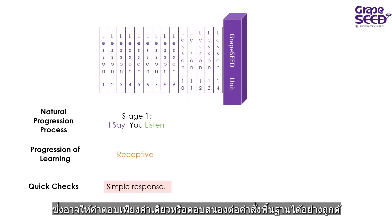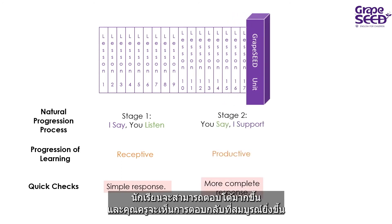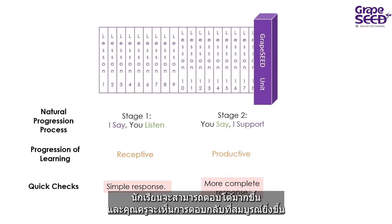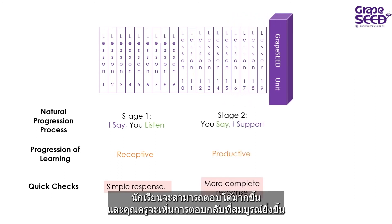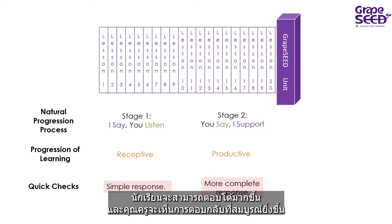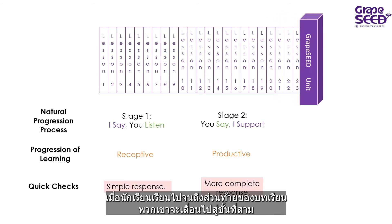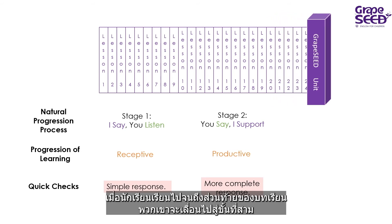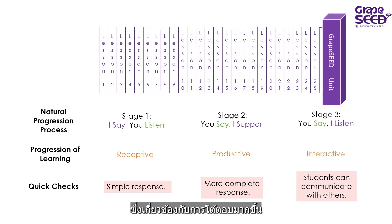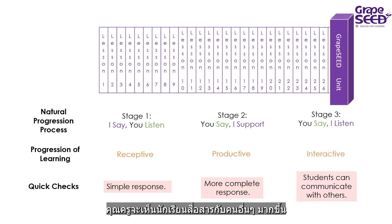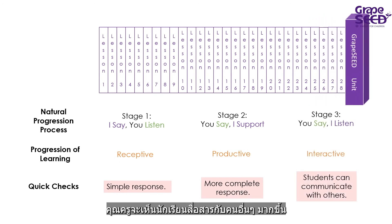As the lessons progress, the students move to stage two, where they are able to produce more and the teacher can look for more complete responses. As the students move towards the end of the lessons in the unit, they move to stage three, which involves more interactivity. The teachers will look for the students to communicate with others.